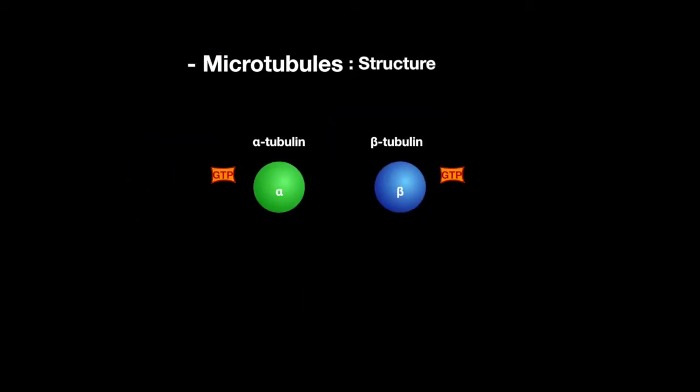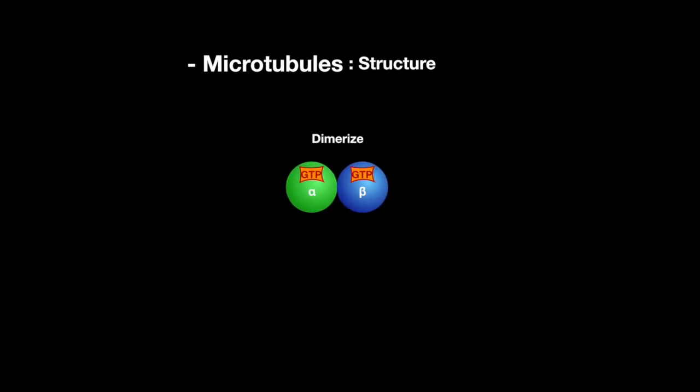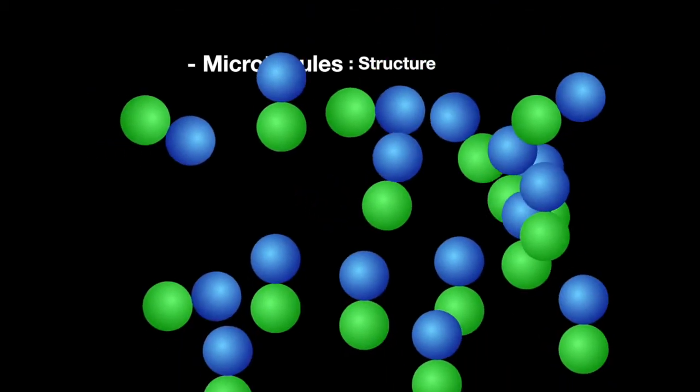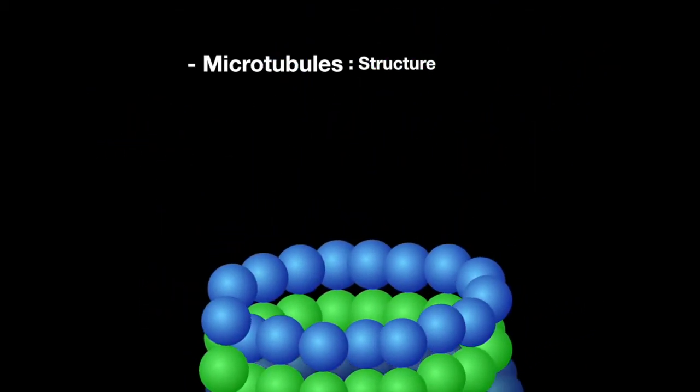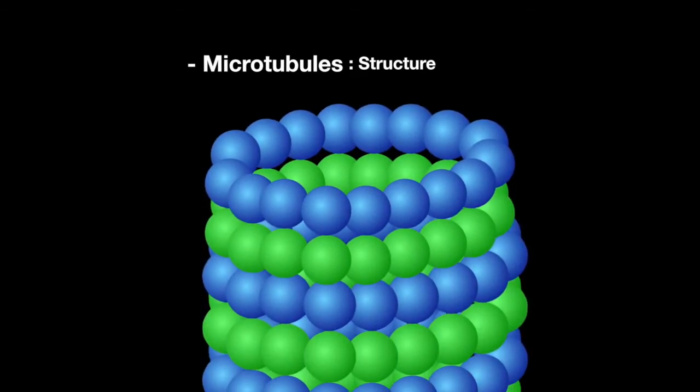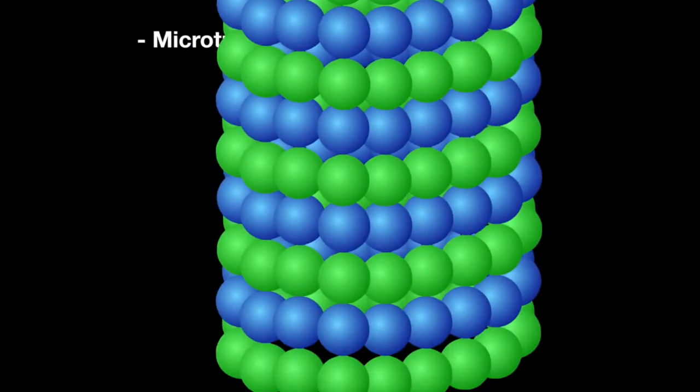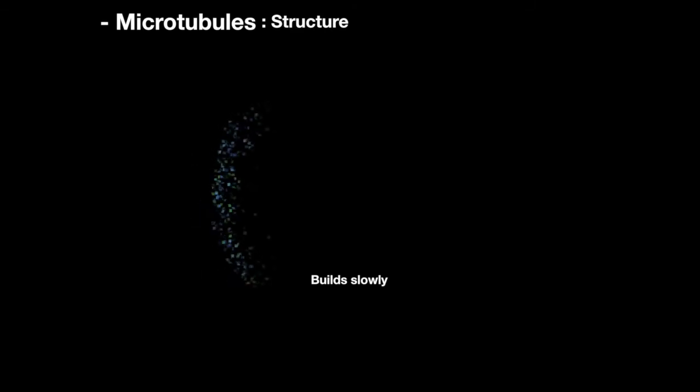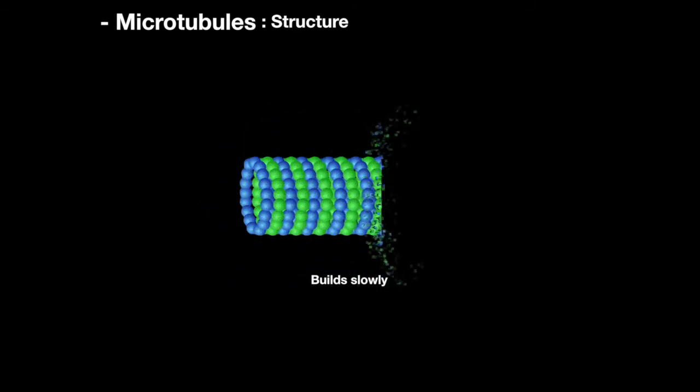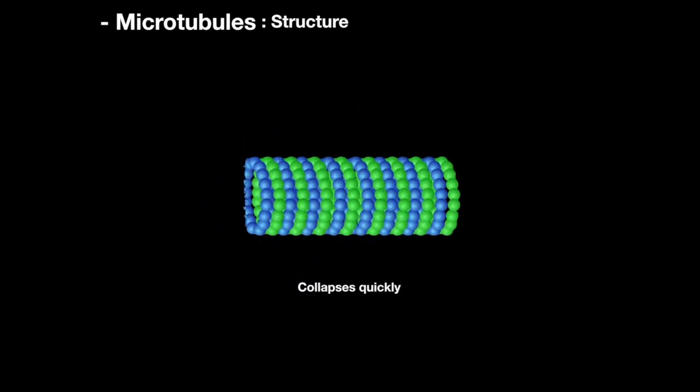The structure of microtubules is composed of alpha and beta tubulin subunits. These subunits will dimerize and contain two GTPs bound. The dimer is then polymerized into a helical array structure. This structure can grow slowly, then collapse quickly.